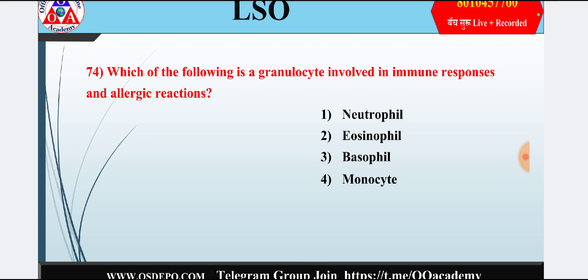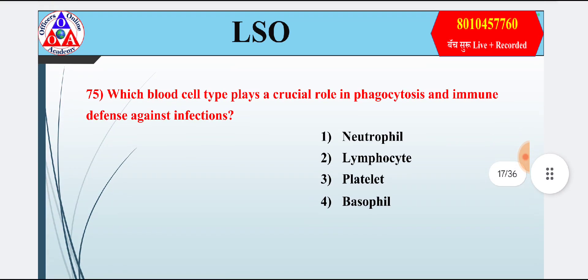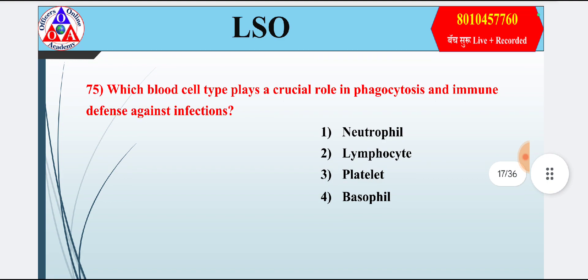Question 14: Which of the following is a granulocyte involved in immune response and allergic reactions? Option 1: neutrophil; option 2: eosinophil; option 3: basophil; option 4: monocyte. Answer is option 2 — eosinophil.